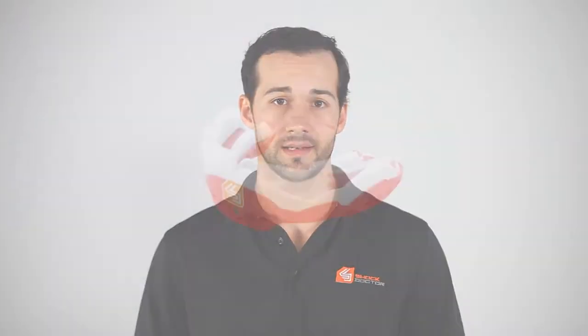The Ultra II STC is available in adult and youth sizes and comes in red, pink, royal, black, orange, and green.